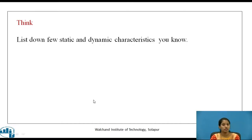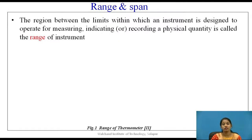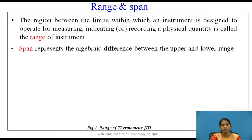Let us see what are static characteristics. The first one is range and span. Range is the region between the limits within which an instrument is designed to operate — to measure, indicate, or record a physical quantity. An instrument will have an upper and lower limit, and the region between those limits is known as the range. Span represents the algebraic difference between the upper and lower range values.